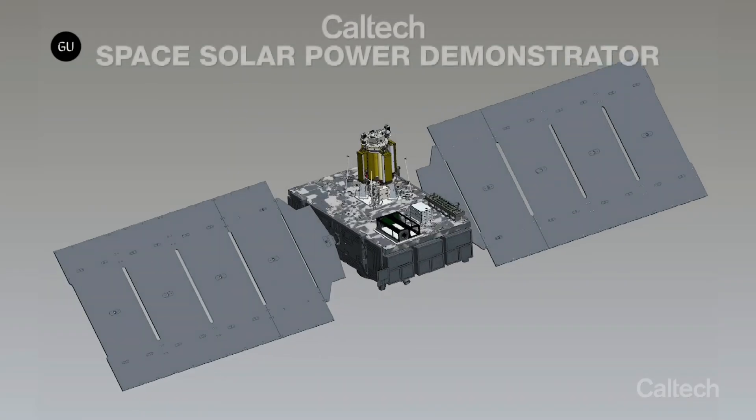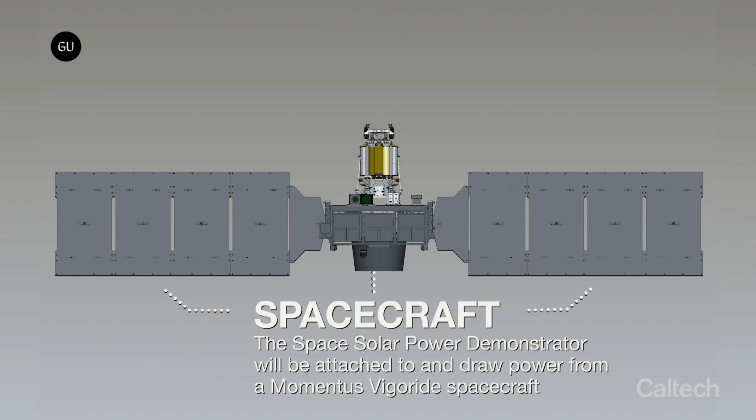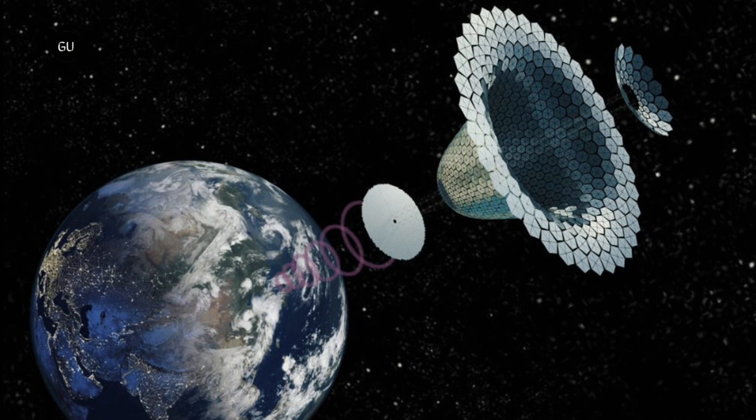The space solar power prototype, dubbed MAPLE, is one of three key technologies being tested by the California Institute of Technology's Space Solar Power Project, SSPP, which aims to harvest solar power in space and transmit it to the Earth's surface.